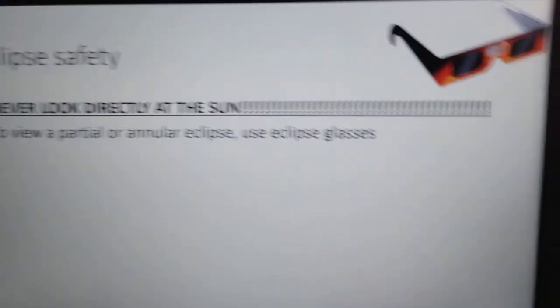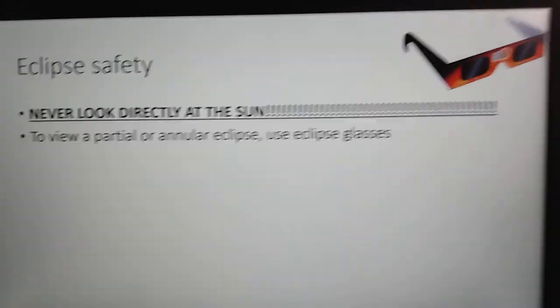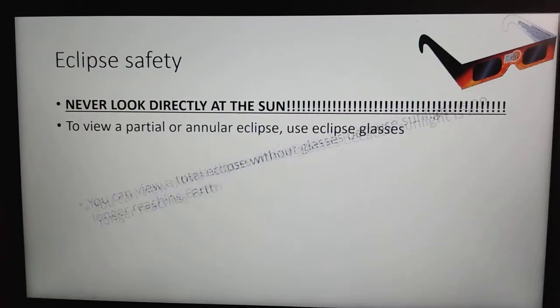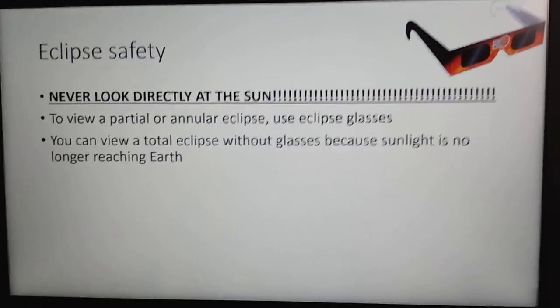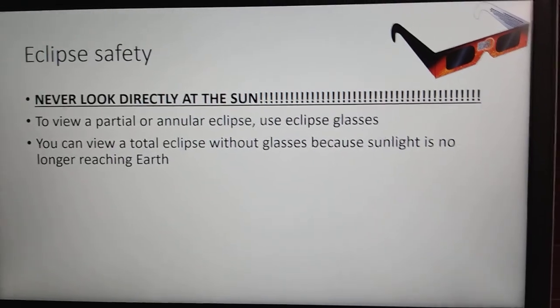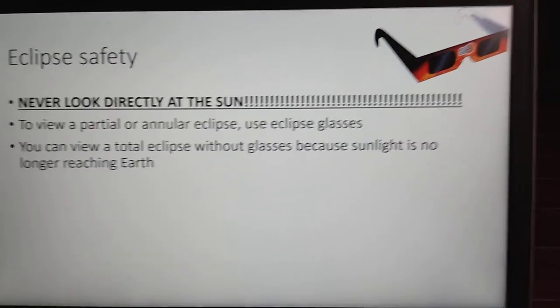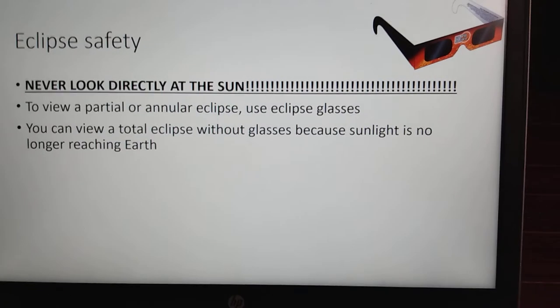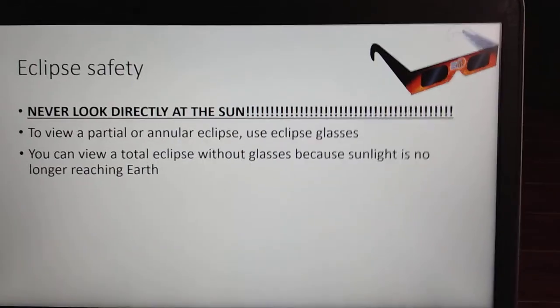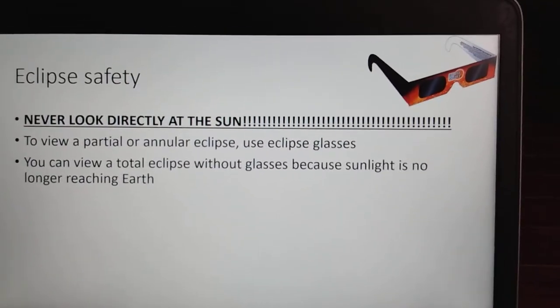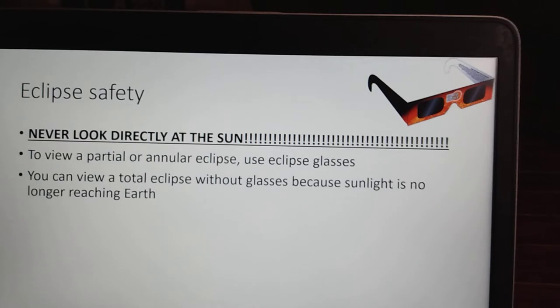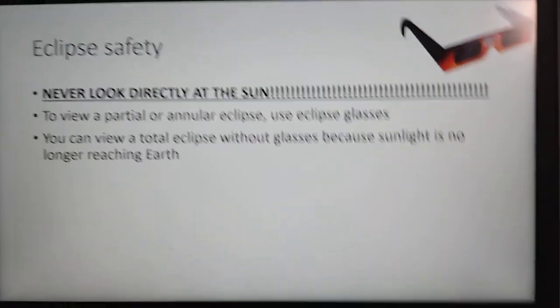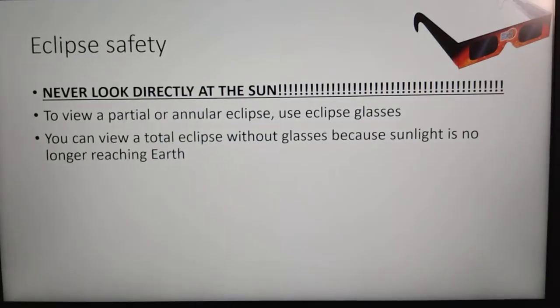All right. You can view a total eclipse without glasses because sunlight is no longer reaching Earth. And when there's no sunlight reaching Earth, there's no solar radiation. This is why you should never look directly at the sun, because you will expose your eyes to harmful solar radiation and too much exposure will cause blindness.